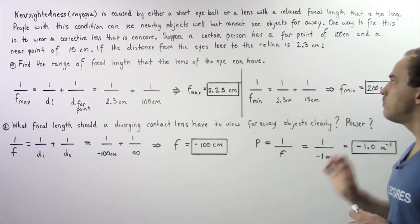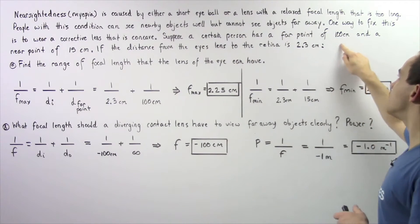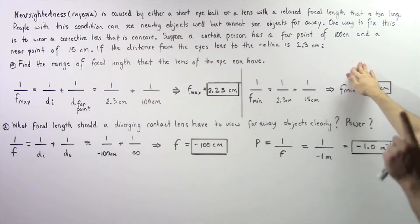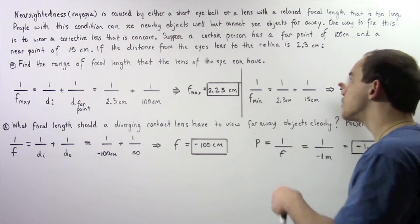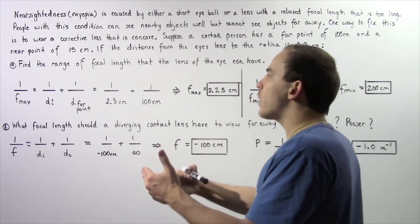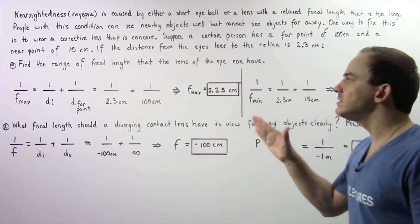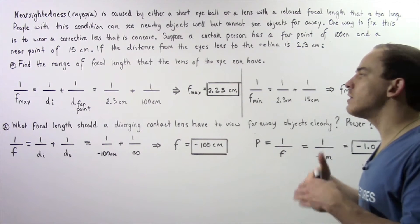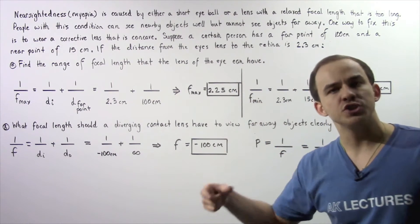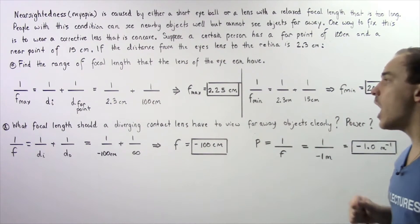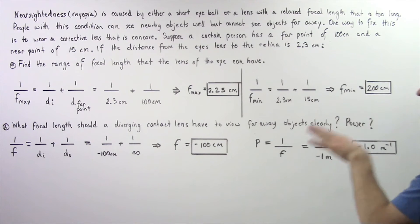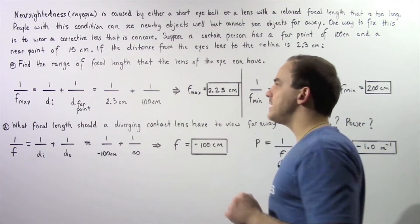Suppose a certain person has a far point of 100 centimeters and a near point of 15 centimeters. The distance from the eye's lens to the retina is given as 2.3 centimeters. In part A, we find the range of focal length values that the lens of the eye can have without any corrective lens. In part B, we find what focal length a diverging contact lens should have to view objects infinitely far away, and also find the power of such contact lenses.